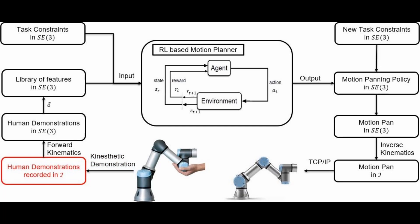All these human demonstrations are recorded in the joint space using the recording capability of the UR5E robot. Using forward kinematics, corresponding human demonstrations are obtained in the task space. Features of these five human demonstrations are saved in a library.